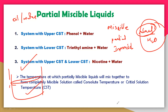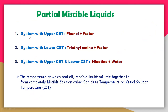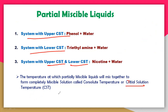Partial miscible liquids have limited solubility and are classified into three types: systems with upper CST, systems with lower CST, and systems with both upper and lower CST. CST stands for Critical Solution Temperature.